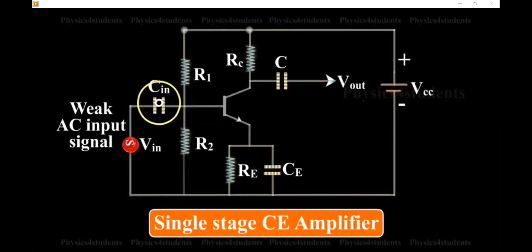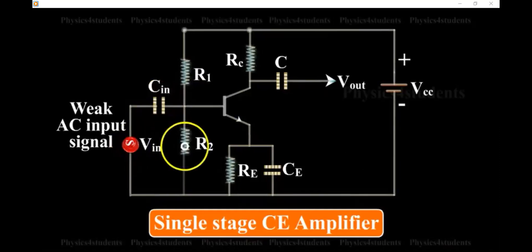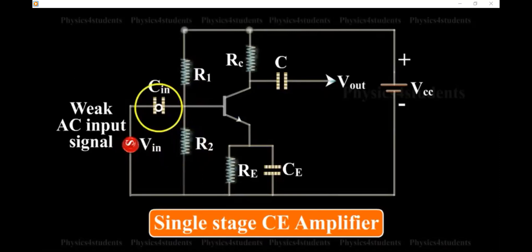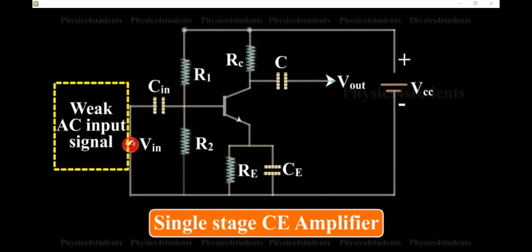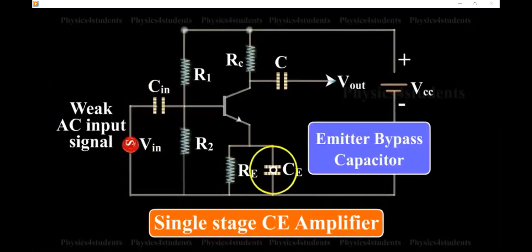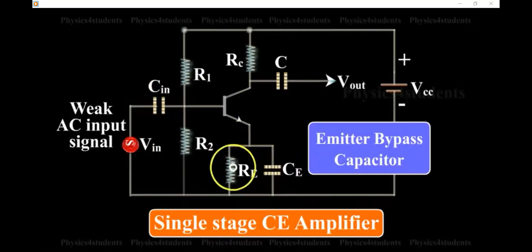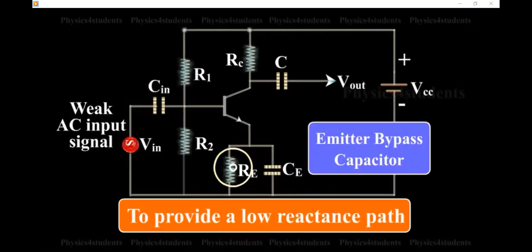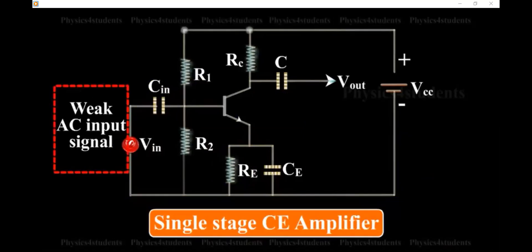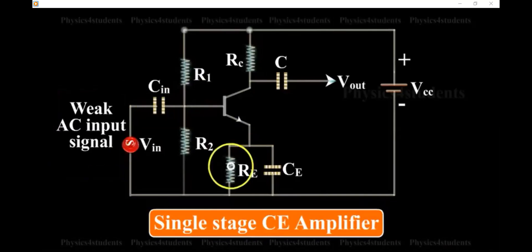If the input capacitor is not used, the signal source resistance will come across R2 and thus change the bias. The input capacitor C-in allows only AC signal to flow. The emitter bypass capacitor is connected in parallel with RE to provide a low resistance path for the amplified AC signal. If it is not used, the amplified AC signal flowing through RE will cause a voltage drop across it, thereby shifting the output voltage.